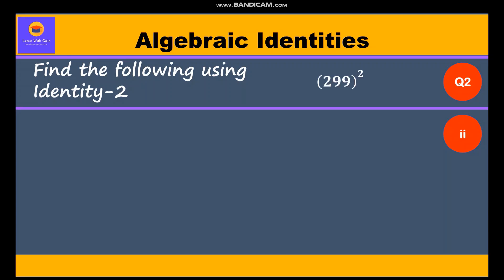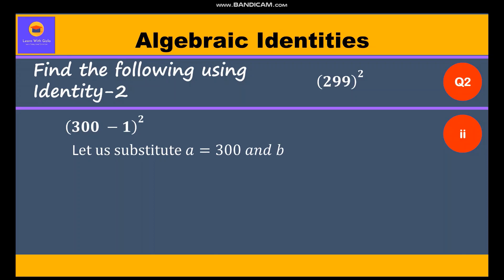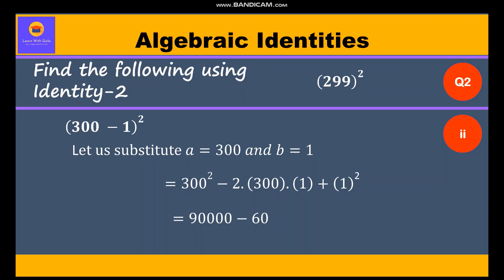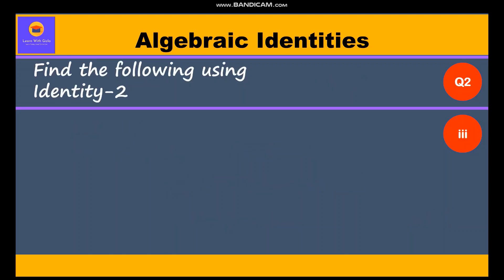Now the second part: 299 whole square, which can also be written as (300 minus 1) whole square. We substitute a equal to 300 and b equal to 1. We get 300² minus 2 times 300 times 1 plus 1², which equals 90,000 minus 600 plus 1, equal to 89,401.